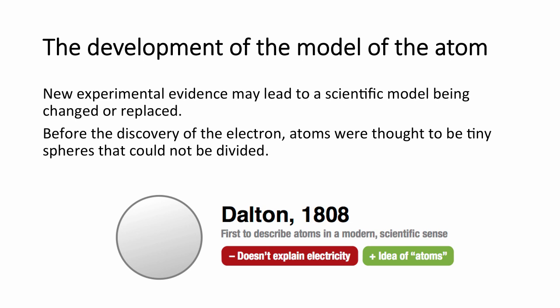Moving on, you need to know about the development of the atom. New experimental evidence has led to scientific models being changed and replaced over time. Before the first discovery of the electron, atoms were thought to be spheres that could not be divided — hence their name, atomos, which means indivisible in Greek. This explained the idea of atoms but didn't explain why things could conduct electricity.